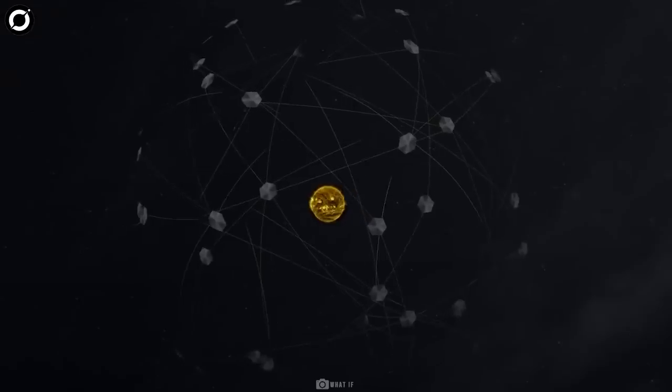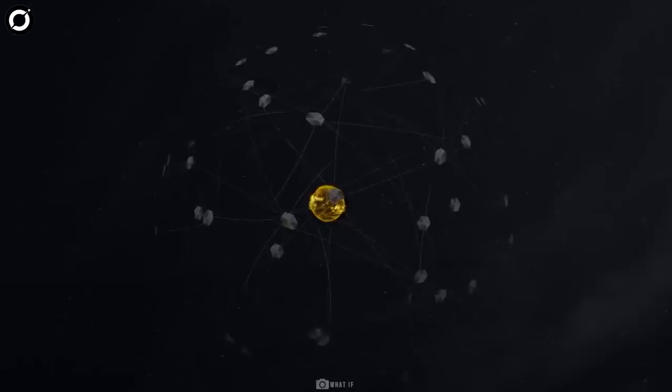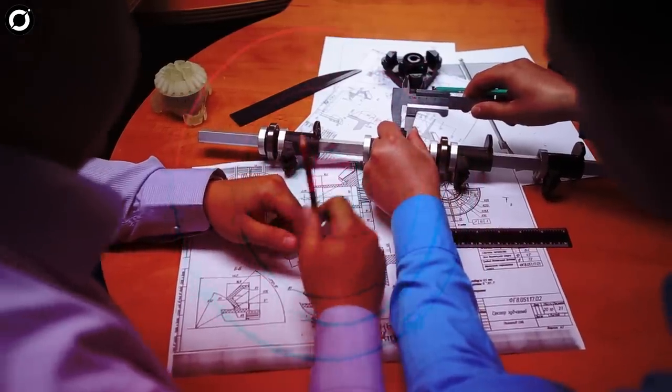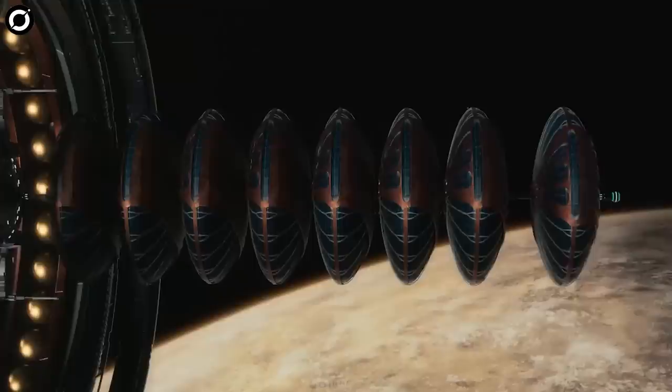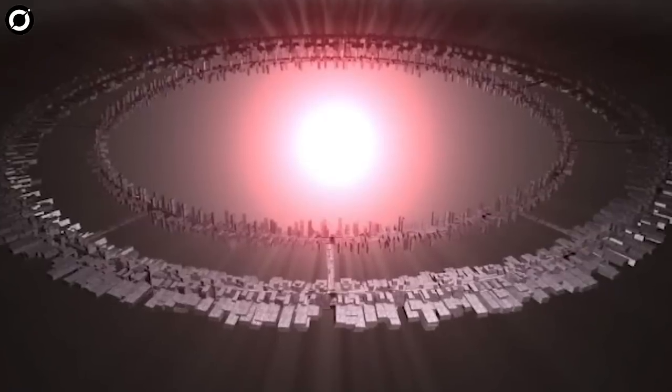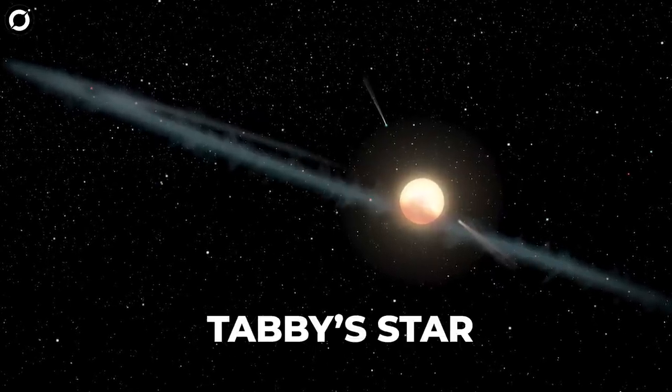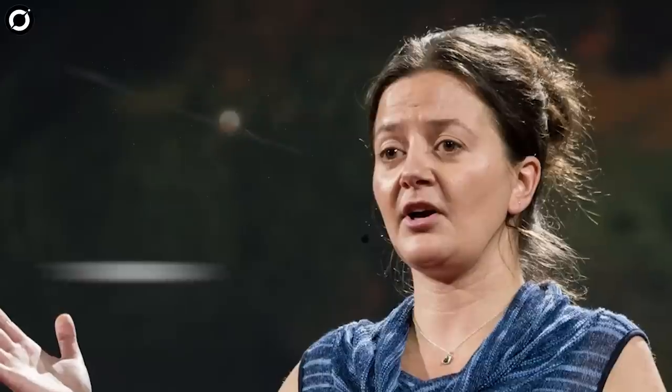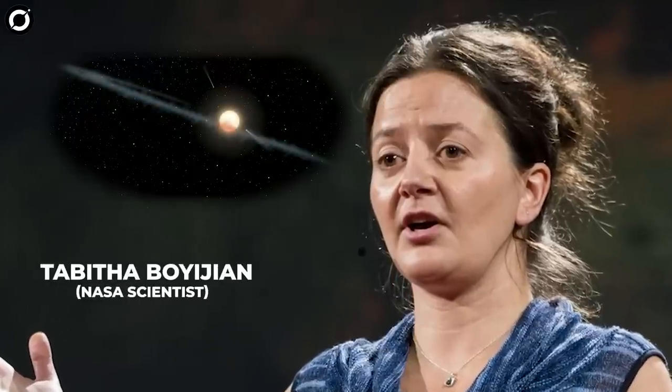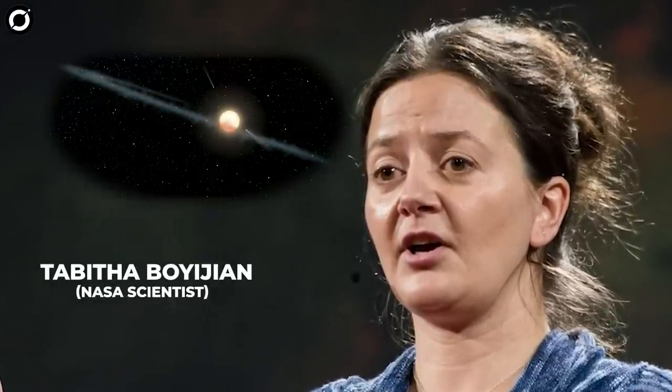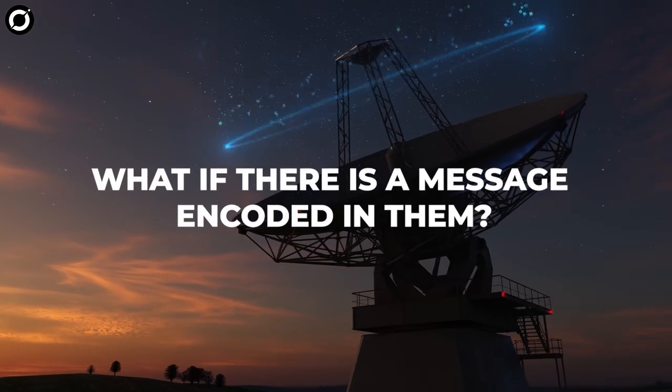First of all, what do we know about a Dyson sphere technology? Humanity has only hypothesized its mechanics, while an advanced civilization might have actually constructed one. Secondly, the dips of Tabby's Star, named after the NASA scientist Tabitha Boyajian who found it, might look irregular, but are they really? What if there is a message encoded in them? What if they are trying to get our attention?